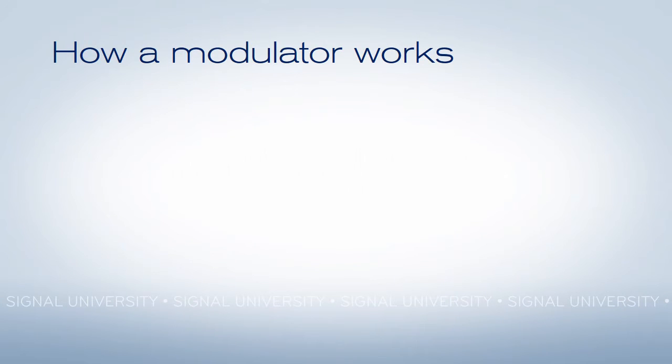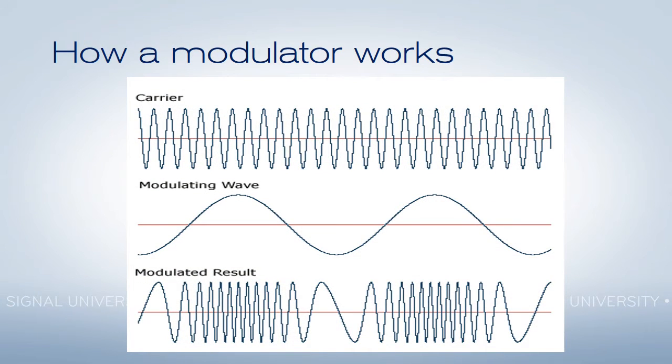Modulators actually work fairly simply. Starting with a basic electrical wave, they take the signal wave, which is represented as the middle picture, and add it so the two are actually combined. Then when it gets back to the television, they're uncombined and the actual signal wave comes out and can be sent straight to the television.